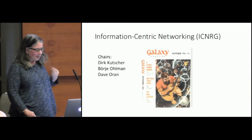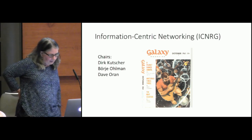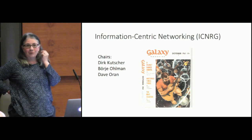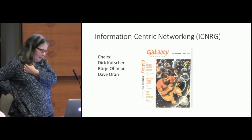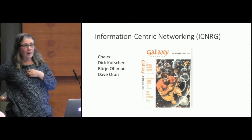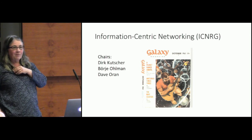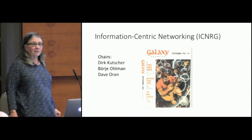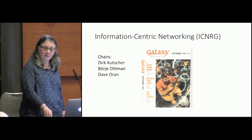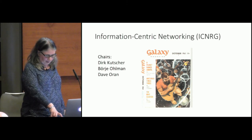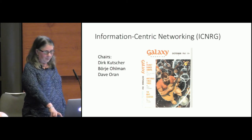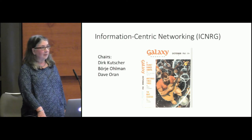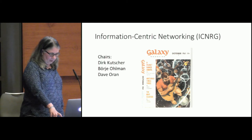Another group is the Information Centric Networking Research Group. They're thinking about a completely new approach to the internet where you route on names instead of addresses — you only care about the name of the content and some cryptographic information about the content, not where anything is. It's a very active group and will publish some informational specifications for the protocols. Like the IETF, the IRTF is very interested in work that can be coded and demonstrated, though it's often further from deployment.